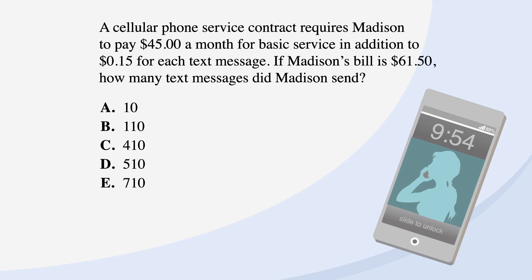Let's look at an example from the ACT. Here we've got a question about Madison's cell phone bill. Madison's cell phone service contract requires her to pay $45 a month for basic service, in addition to 15 cents for each text message. If Madison's bill is $61.50, how many text messages did Madison send? A is 10, B is 110, C is 410, D is 510, and E is 710.